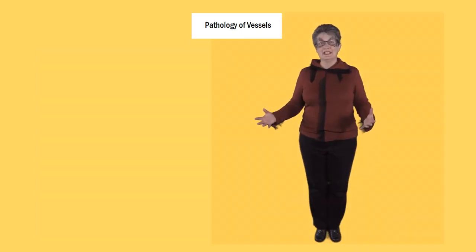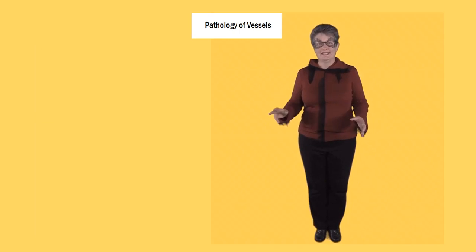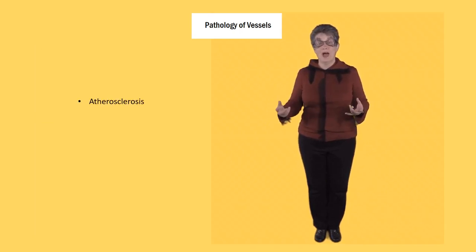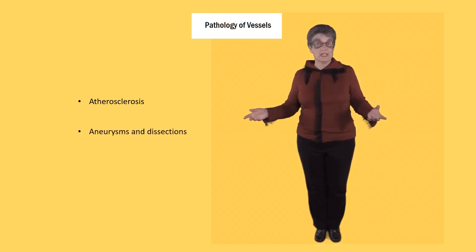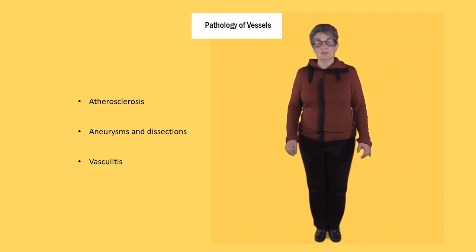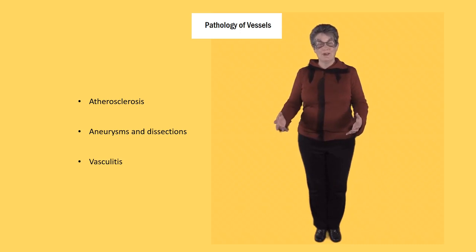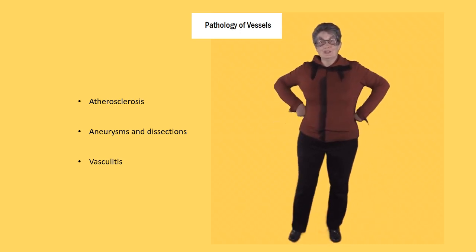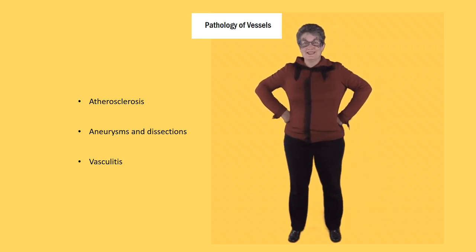This brings us to the end of our consideration of vascular diseases: atherosclerosis, which underlies MI and stroke; aneurysms and dissections that can cause sudden death in patients; and vasculitis — often the mystery, but two common ones being temporal arteritis and hypersensitivity vasculitis. Thank you for joining me on this pathology journey, where you will become a pathology superhero and learn to treat your patients better.